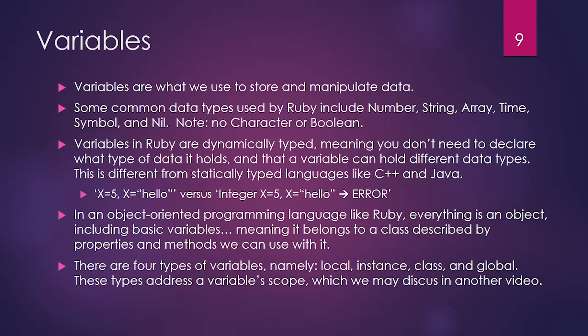In an object-oriented programming language like Ruby, everything is an object, including your basic variables. That means your variable will belong to a class, which is described by properties and methods that can be used with it. The methods and properties of your variable will depend on what kind of data it holds. If you go looking up types of variables on the internet, you're going to get something like local, instance, class, and global — which refers to the scope of a variable. We're not going to get into scope today too much, but maybe in another video.